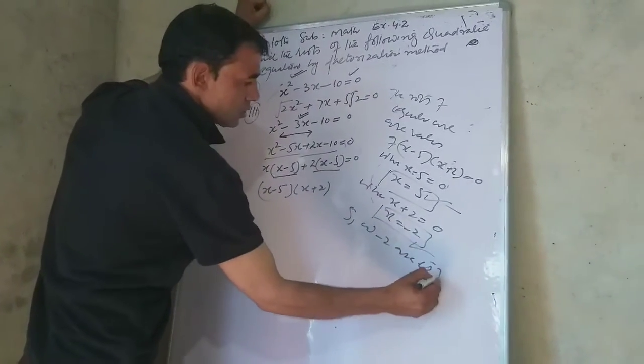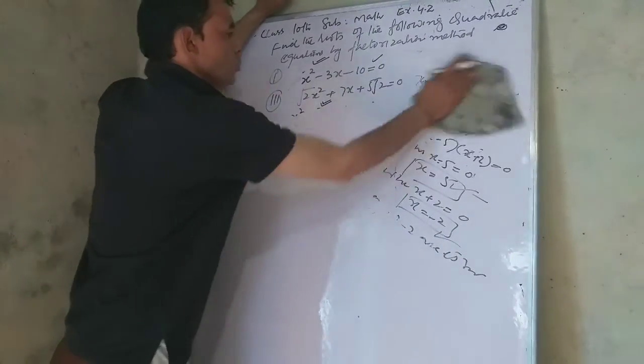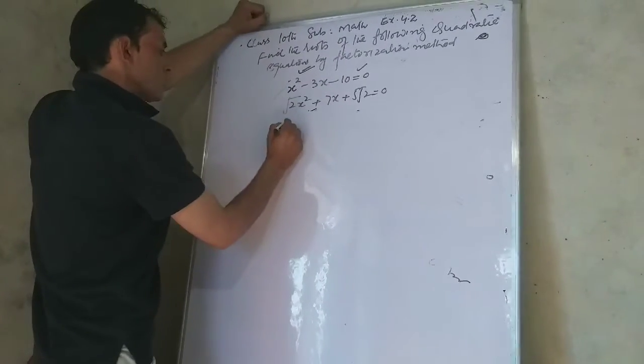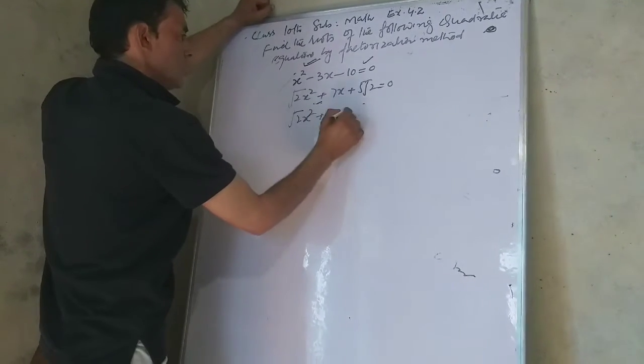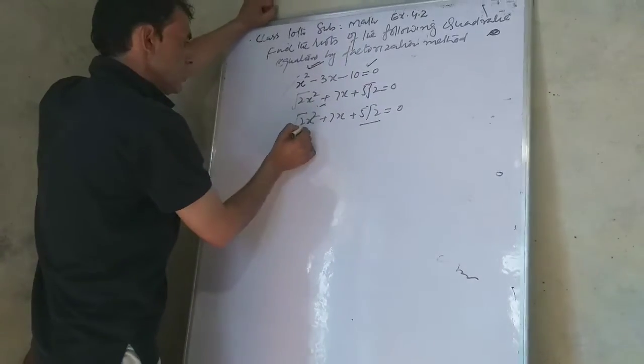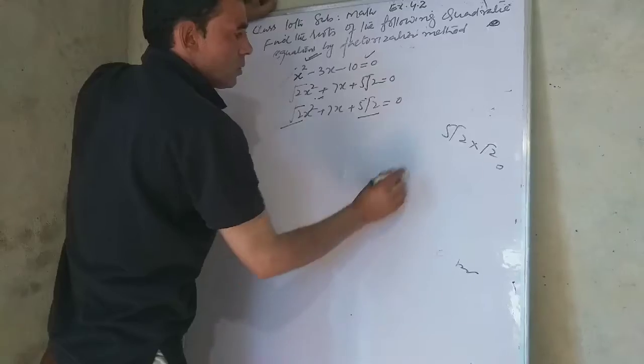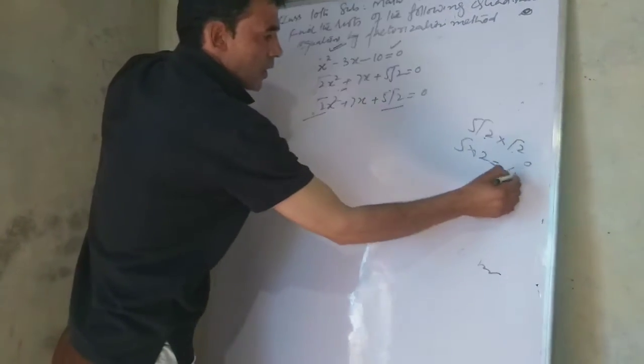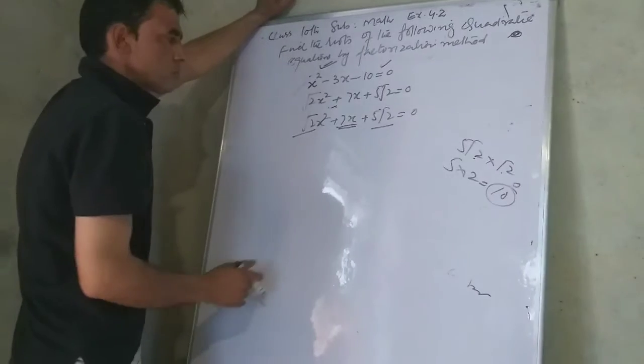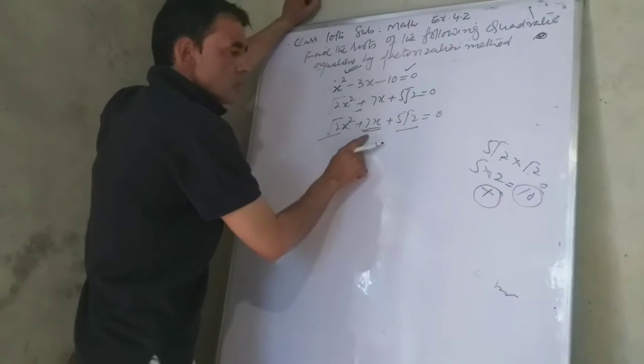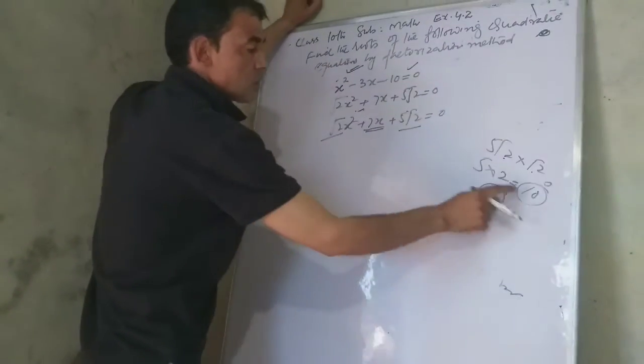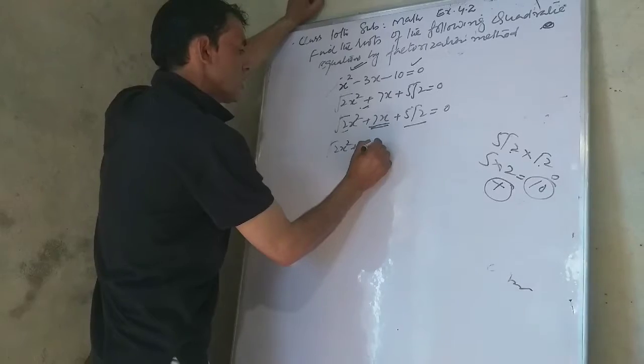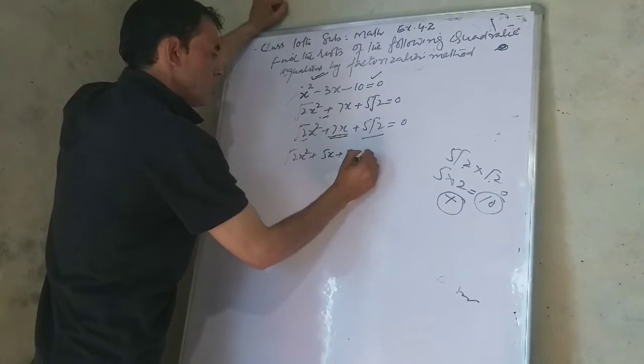Now for the second problem, which is somewhat more difficult. We have √2x² + 7x + 5√2 = 0. We need to apply the factorization method to find its roots.